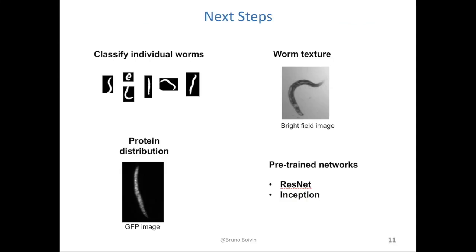As part of the next steps for this project, classifying individual worms and then counting them could allow the system to classify even images of mixed populations of dead and living worms. Also, the original images obtained from the microscope — those that have not been binarized — might also contain additional information about texture, and this could be used to classify worms.